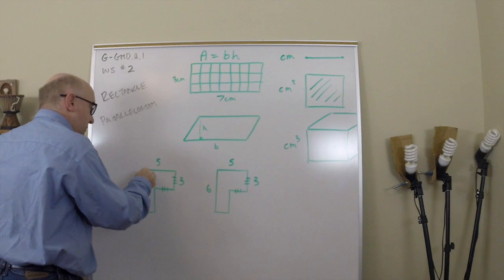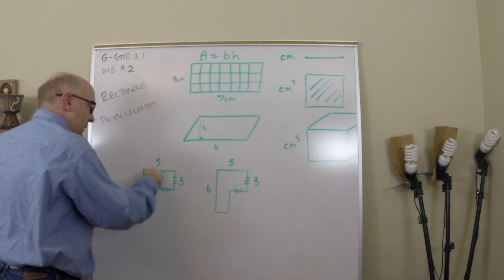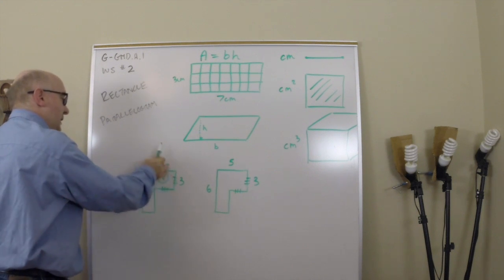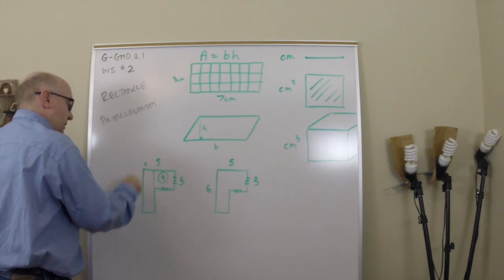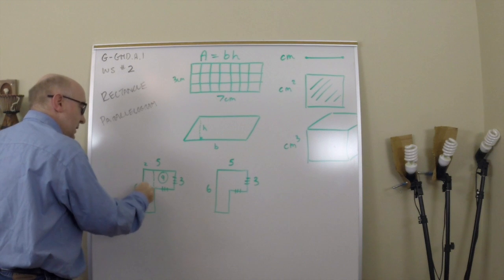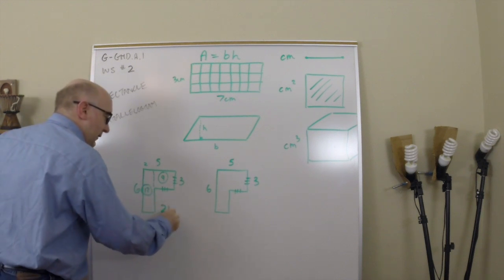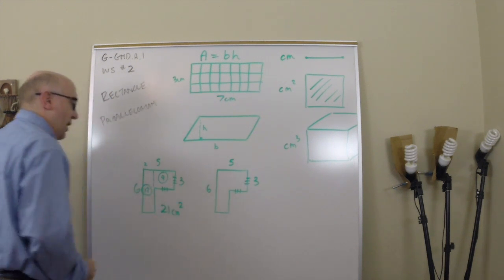So some students will say, oh, I see this. This is a three by three, so nine here. And five minus three is two, so six times two is twelve. And so they get an area of 21 centimeters squared. Kind of cool.